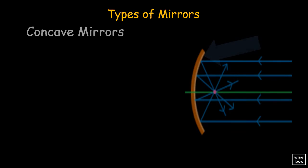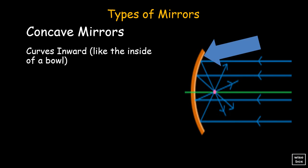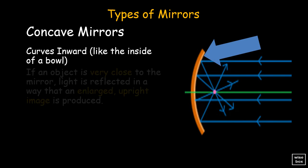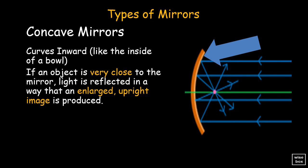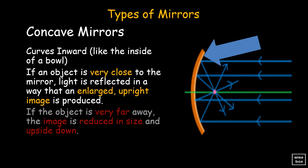Concave mirrors are curved inward like the inside of a bowl. If an object is very close to the mirror, light is reflected in a way that an enlarged, upright image is produced. If the object is very far away, the image is reduced in size and upside down.